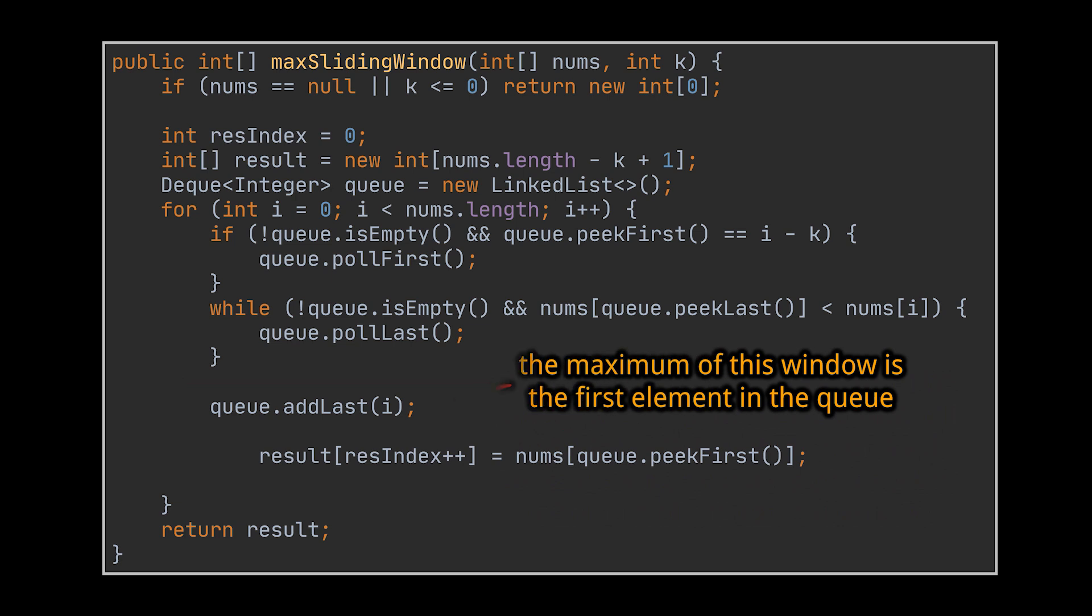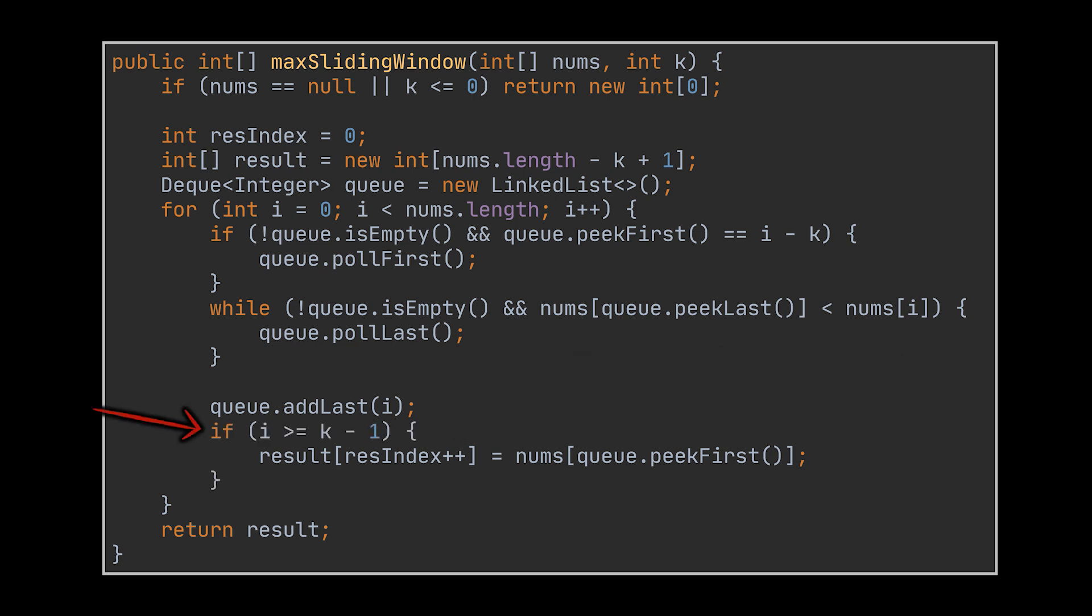Consequently, the result or the maximum integer of that window will be the first element in the queue. In the last step of this implementation, we assign the result of the current window to be the first element in the queue. Finally, do not forget to wrap this assignment with this if condition, since the first k elements all belong to the same window and produce a single result.